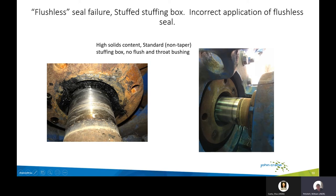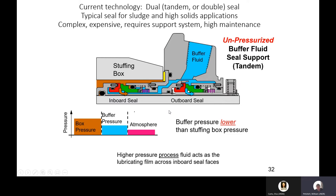Here is what we call a dual seal. Depending on how the pressures are set up, it's either tandem or double — tandem is shown here. You've got your process pressure highest, the buffer or barrier pressure in between the two seals a little bit lower, and then atmosphere out here. This is very typical in some of your tougher applications with sludge and higher solids. You tend to use dual seals because that's the only thing that survives. They're complicated and expensive and not the easiest, but they're really one of the only things that work.